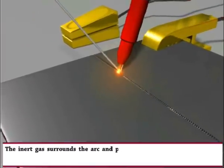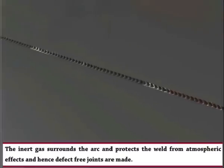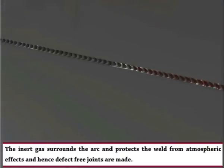The inert gas surrounds the arc and protects the weld from atmospheric effects, and hence defect-free joints are made.